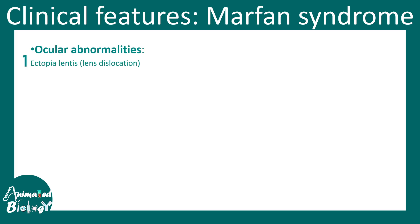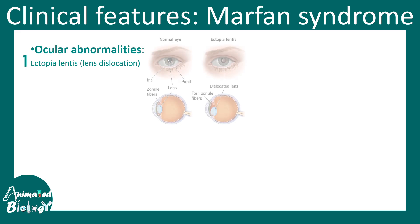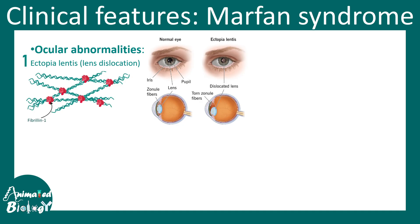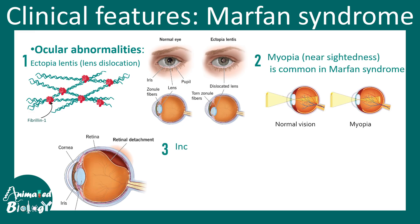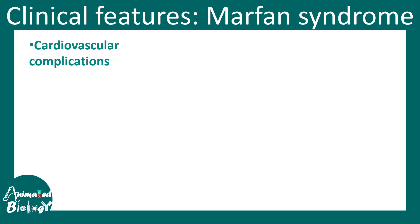There could be ocular abnormalities like ectopia lentis, meaning dislocation of the lens — the lens falls off from its position because fibrillin was really important in the zonules of the eye. There could also be myopia, meaning nearsightedness, and detachment of the retina itself, which might lead to blindness.